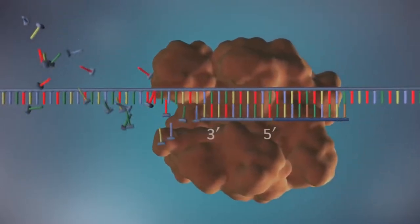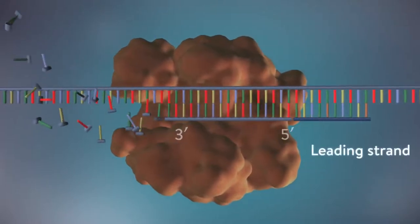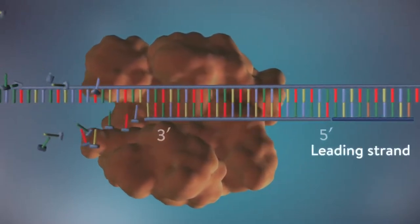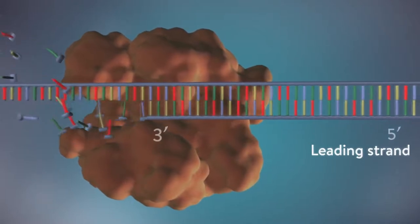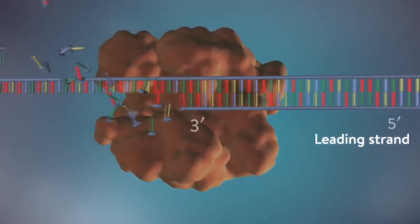One of the new strands of DNA, the leading strand, is made continuously, with DNA polymerase adding bases one by one in the 5' to 3' direction.